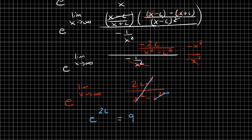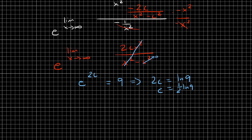So we want e to the 2c to equal 9. Taking the natural log of both sides gives 2c equals ln(9). Therefore c equals (1/2) ln(9). We can rewrite this by bringing the 1/2 as the exponent of 9, giving ln(9^(1/2)), and since the square root of 9 is 3, the final answer is c equals ln(3).